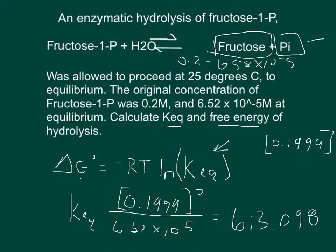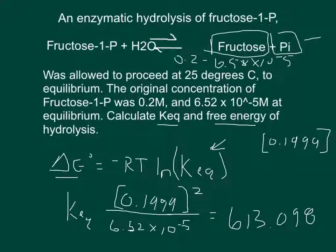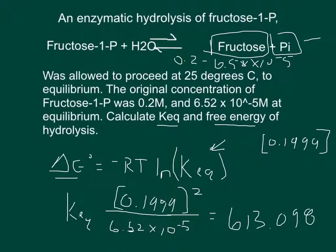And then the only thing left to do is plug KEQ into this part of the equation. The temperature was at 25 degrees, but we have to convert that to Kelvin because our gas law constant is in units of Kelvin. And so 25 plus 273 is 298.15 for the temperature in Kelvin.